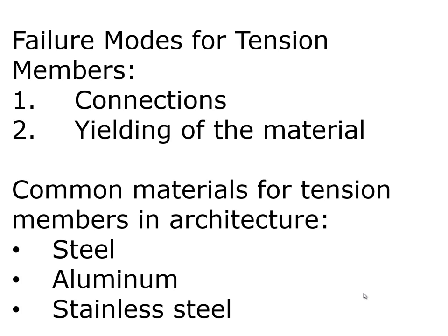As we talked before, failure modes for tension members can occur in the connections or through yielding of the material. We're not going to look at connections in any great detail for tension members. We've talked about what the issues are to avoid tensile connection failures, but the sizing of them tends to be rather complex. We mainly want to know that we can roughly size the cross sections of the tensile material in order to avoid yielding.